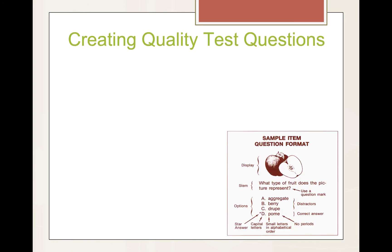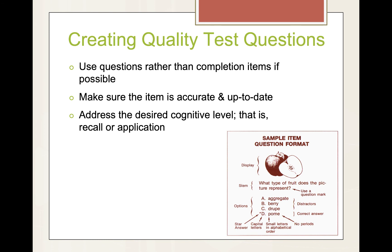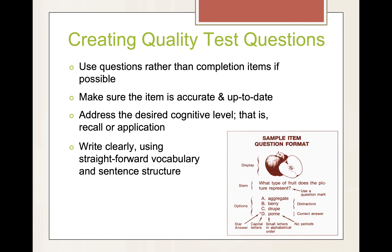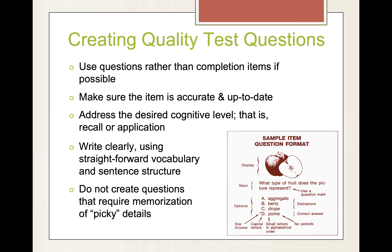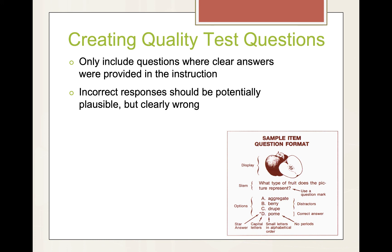Creating quality test questions. Use questions rather than completion items if possible — there's an example in the lower right-hand corner. Make sure that the item is accurate and up-to-date. Address the desired cognitive level: are you testing recall or application? Application allows you to test for more depth of learning. Write clearly using straightforward vocabulary and sentence structure. Do not create questions that require memorization of picky details. Go back and look at your objectives and make sure you're covering them. Only include questions where clear answers were provided in the instruction — this is really important. Incorrect responses should be potentially plausible, but clearly wrong. Avoid making up words or terms to confuse people, as this often has the reverse effect on those who actually know the content.